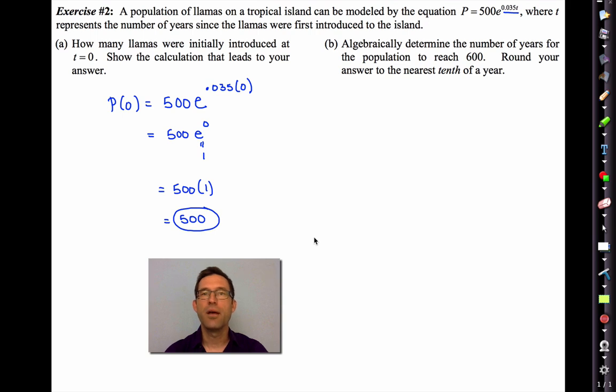Letter b asks us to algebraically determine the number of years for the population to reach 600. Round your answer to the nearest tenth of a year. So in other words, we're trying to determine a solution to this equation. 500 times e to the 0.035t is equal to 600.